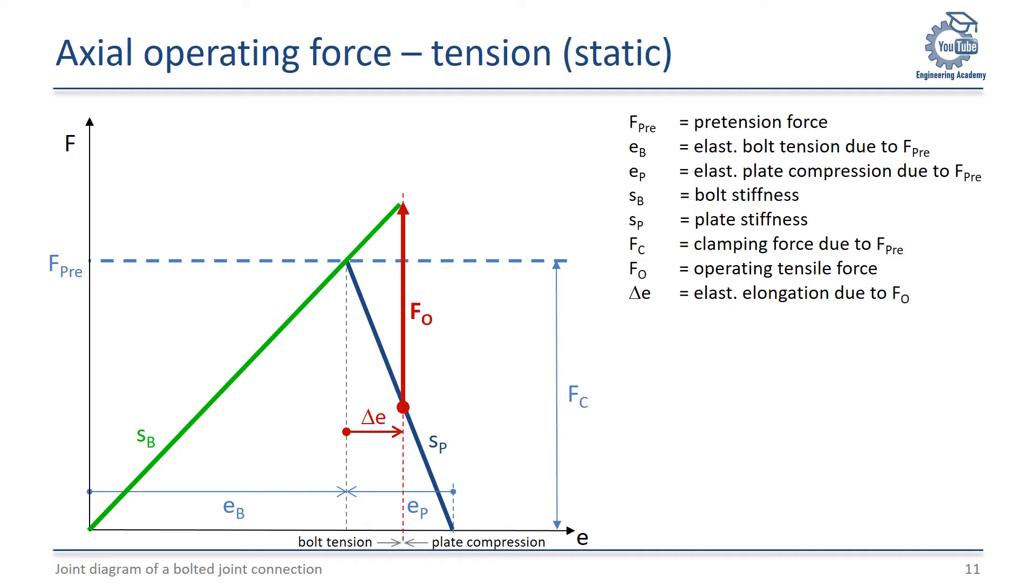According to the gradient of the green bolt stiffness SB, the bolt force increases to the new level FB total. The bolt force is increased by the additional tensile force FPA. The pretension of the plates decreases by the amount of FPA.